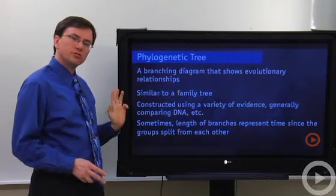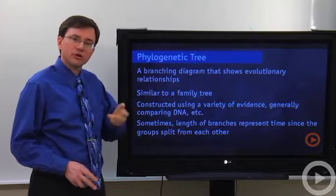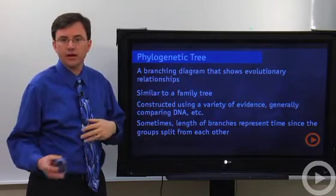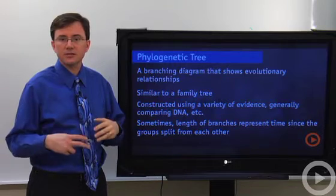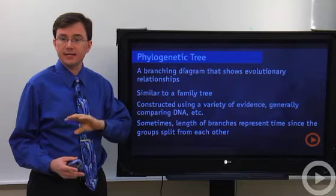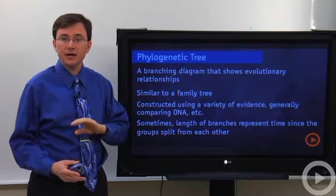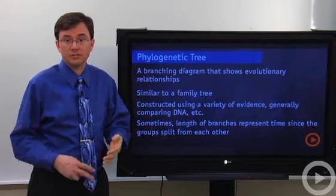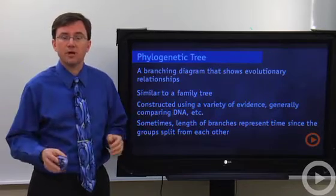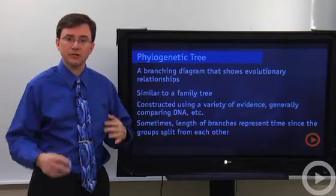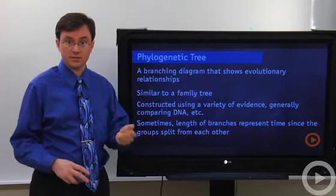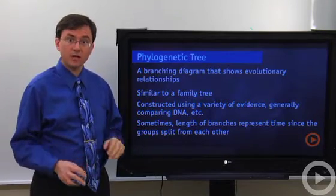How do you construct a family tree? Well, you might start looking at records that give evidence of who gave birth to who, but a lot of times you may not have those written documents. So we can turn to DNA testing and see whose DNA is found in who. That's how they've constructed some of the family relationships of royal families and like Thomas Jefferson's descendants — they've been tracked that way.